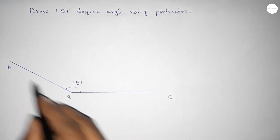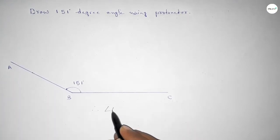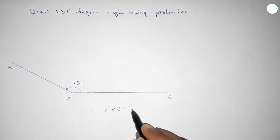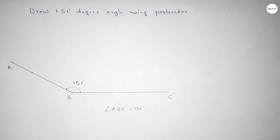Therefore, angle ABC is equal to 151 degrees angle. That's all. Thanks for watching. If this video is helpful to you, then please...